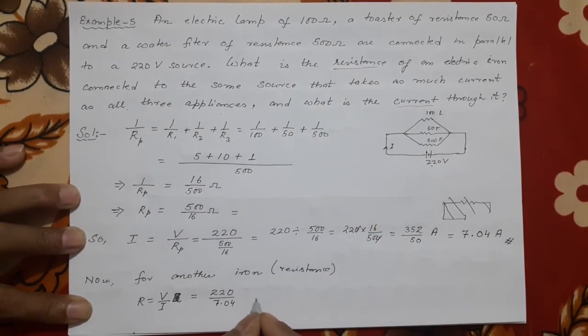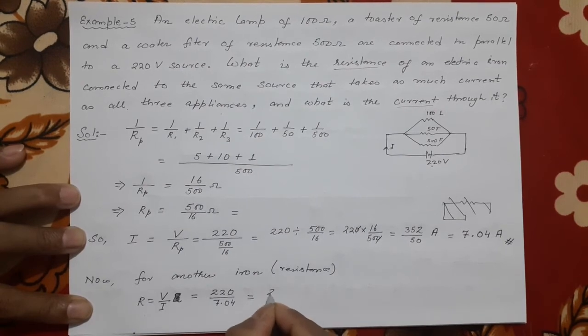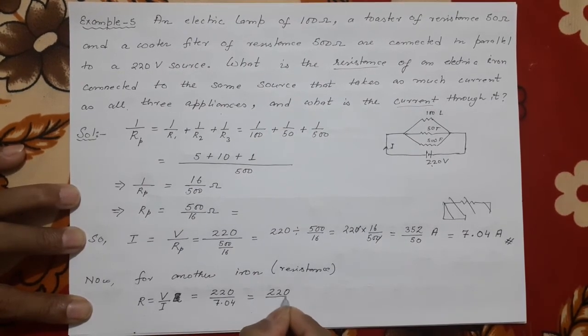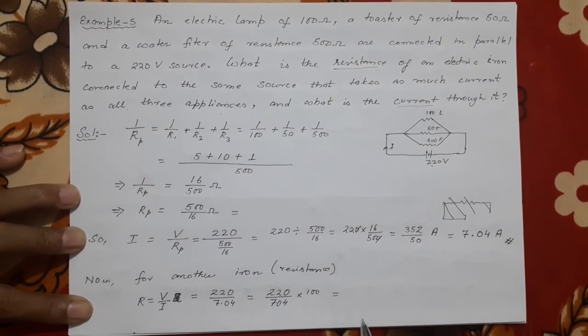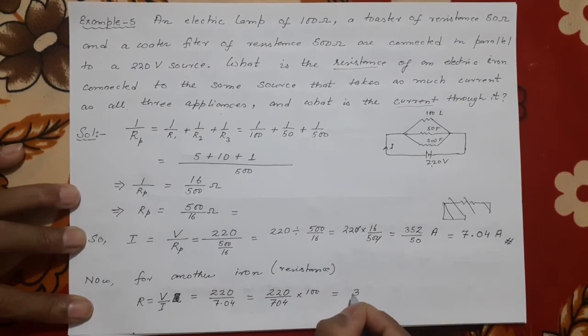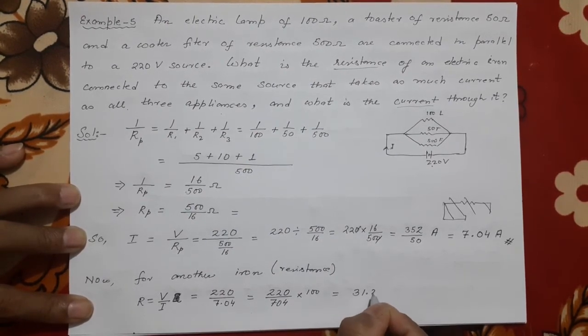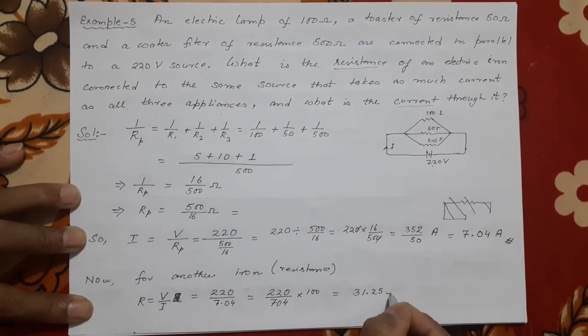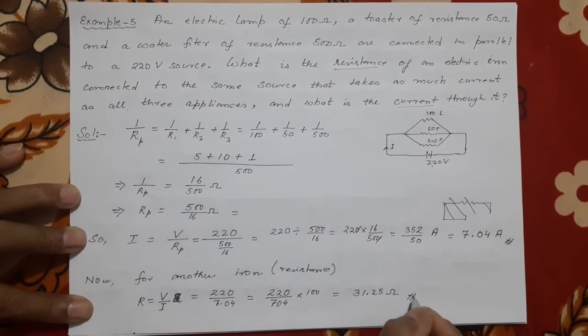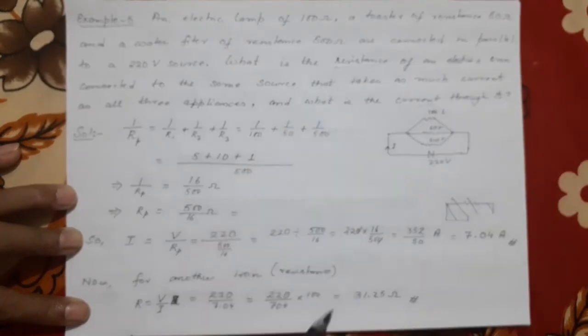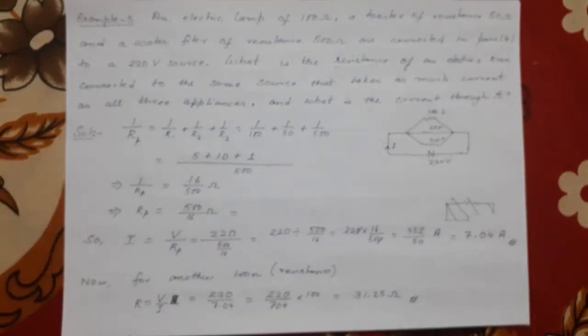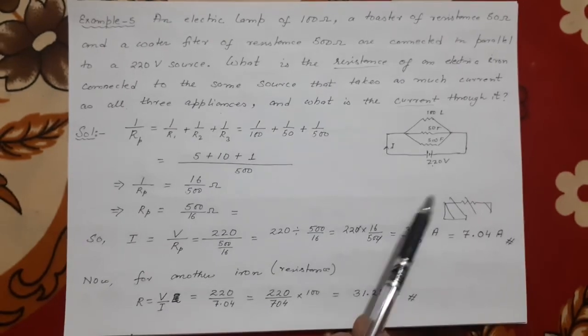Then V is this, 220. Current we draw here, 7.04. So when I get this, 220 divide by 7.04—this 0.0 will make it 100 here above. If you divide this, you will do by yourself. You try to cancel and find, it will come as 31.25 ohms.